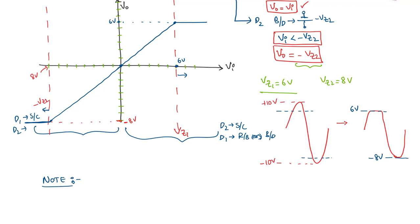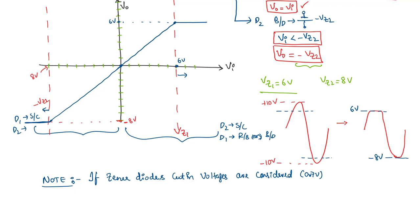If we consider the cut-in voltages of the Zener diodes, which is 0.7 volts, the clipping levels will be 6.7 volts and minus 8.7 volts. If you like this video, please give a thumbs up, subscribe if you haven't yet, and thank you for watching.